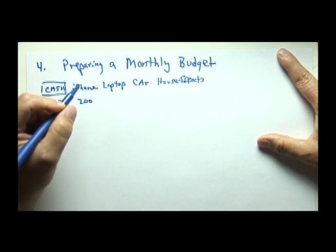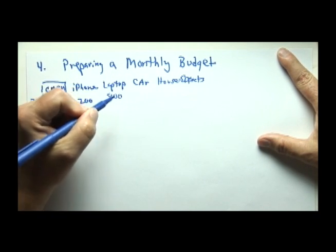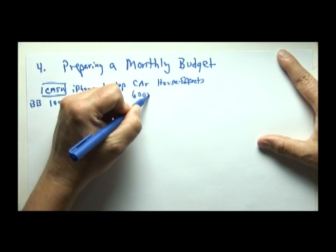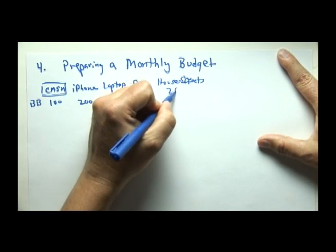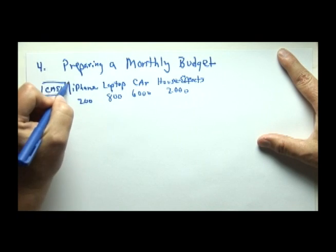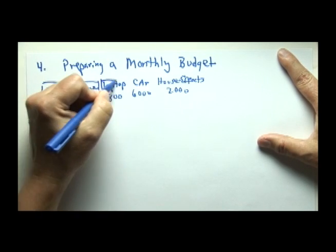If you'll recall, the iPhone we assigned a value of $200, laptop $800, car $6,000, and household effects $2,000, and I'll put a box around each of these accounts.